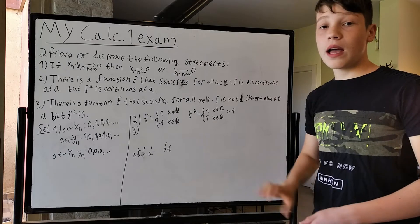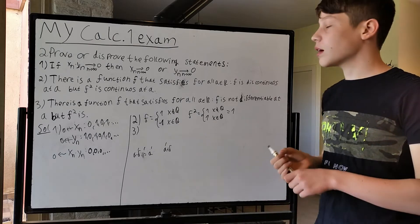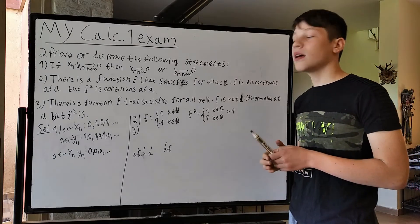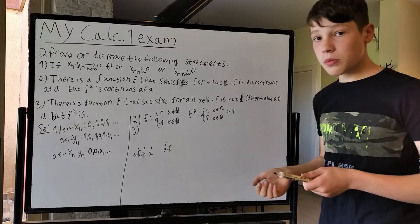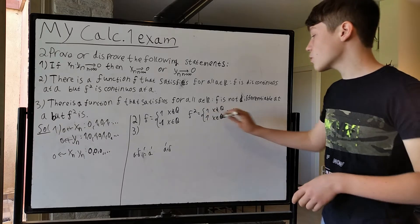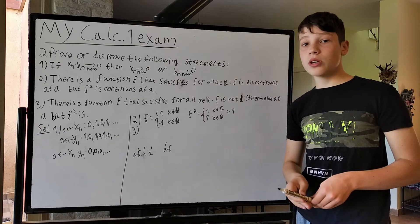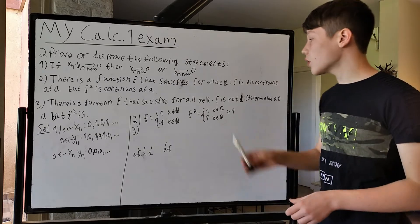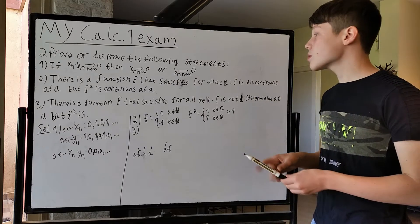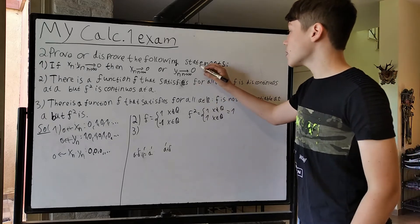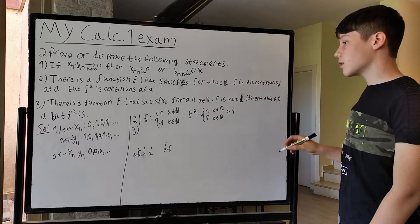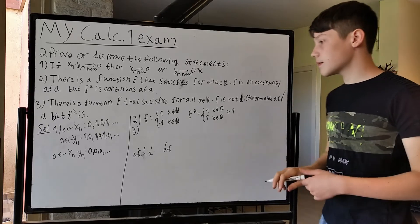Because if f is not continuous at any a, it obviously also isn't differentiable at any a. Yet f² = 1, which is a constant function — not only continuous but also differentiable. So all in all: 1 is incorrect, 2 is correct, and 3 is also correct.